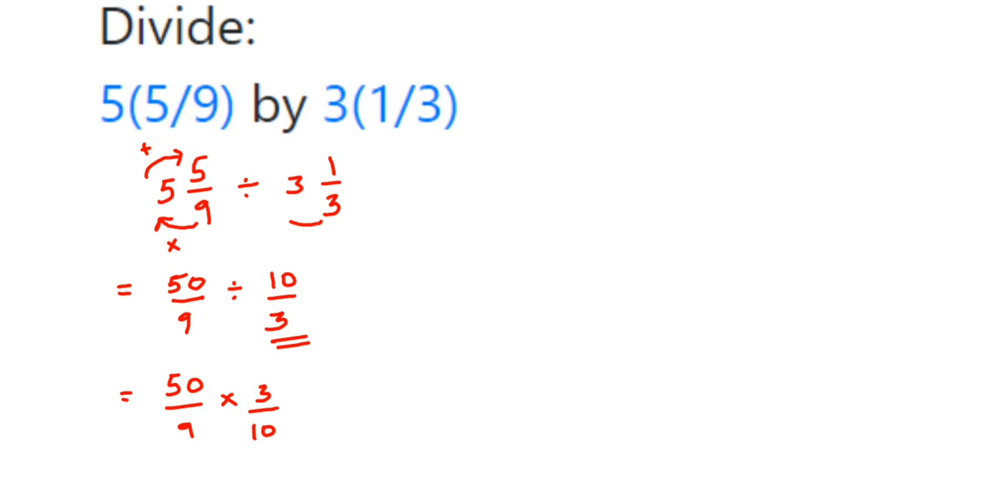Now try to cancel them. 10 times 1 is 10, and 10 times 5 is 50. So when you're canceling, cancel the numbers which are in the numerator and denominator. 10 is in the denominator, 50 is in the numerator, so I can cancel it. Now cancel 3 and 9—3 times 1 is 3, and 3 times 3 is 9. So we are left with 5/3.